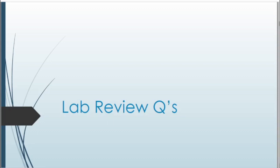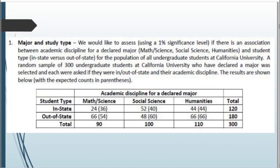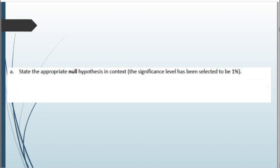All right, let's go ahead and take a look at these lab review questions. For the first one we have major and study types. We would like to assess using a 1% significance level if there is an association between academic discipline for declared major and student type — in-state versus out-of-state — for the population of all undergrad students at California University. A random sample of 300 undergrad students was selected. The results are shown below with expected counts in parentheses.